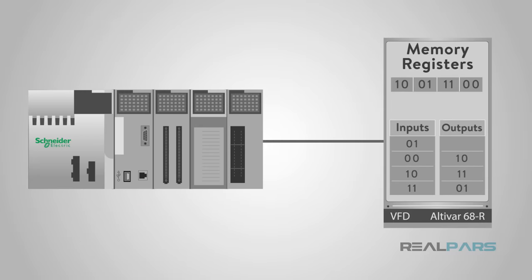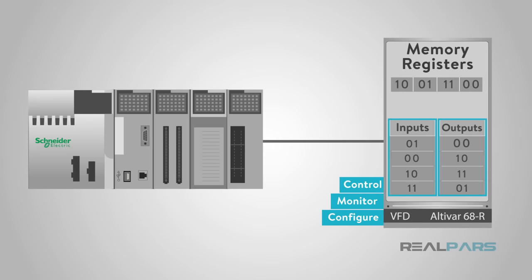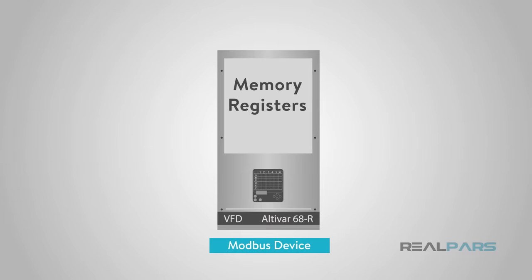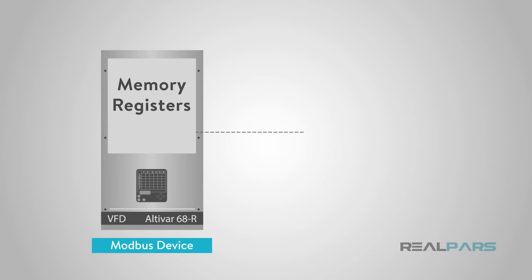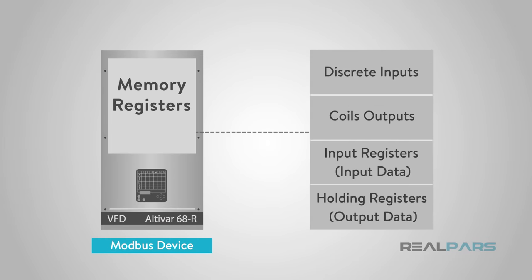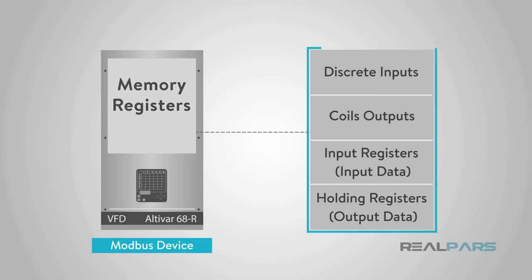Modbus functions perform read and write instructions to the slave's internal memory registers to configure, monitor, and control the slave's inputs and outputs. Modbus devices will typically include a register map outlining where the configuration, input, and output data can be written and read from. You should always refer to the slave's register map of your device to gain a better understanding of its overall operation.